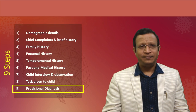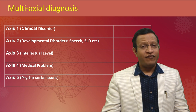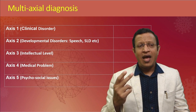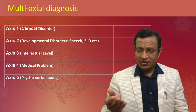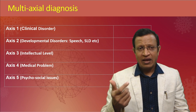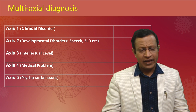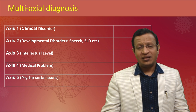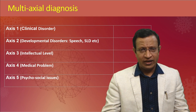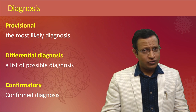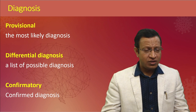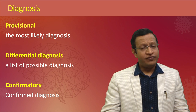For provisional diagnosis, use a multi-axial diagnosis system. Axis one is the clinical disorder. Axis two is a developmental disorder such as specific learning disability or speech disorder. Axis three is intellectual functioning level. Axis four is medical disorder. Axis five is psychosocial issues. Axis six sometimes covers global disability — the psychosocial disability of the child. Make a provisional diagnosis; if unable to reach one, go for a differential diagnosis. If confirmed, state a confirmed diagnosis. If no conclusion is possible, clearly state that due to time constraints or absence of a reliable informant.